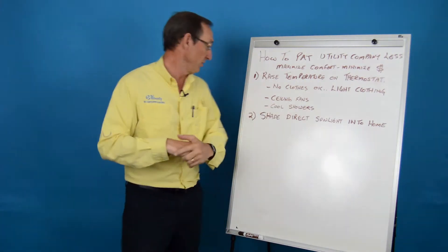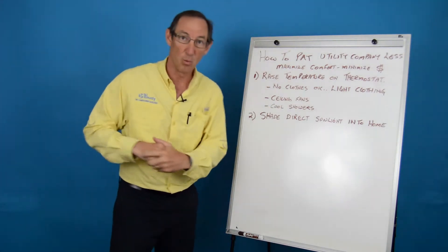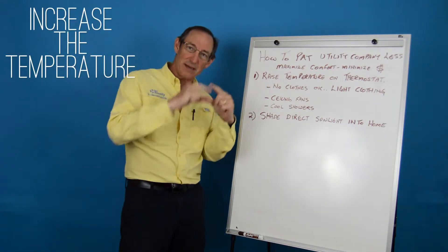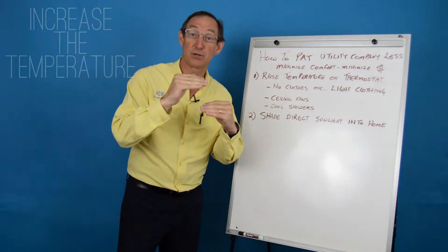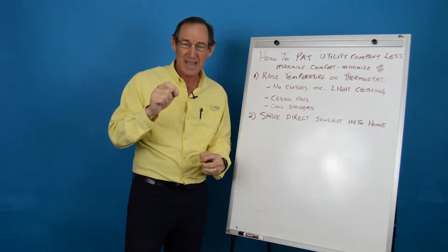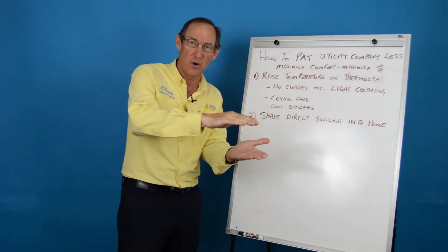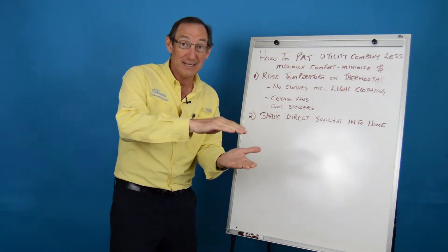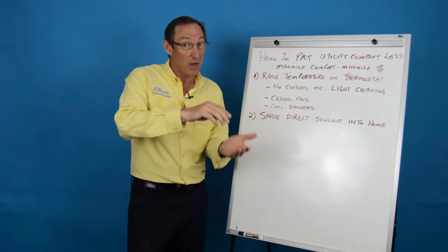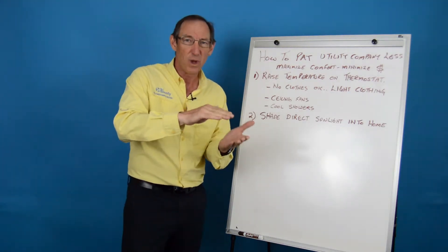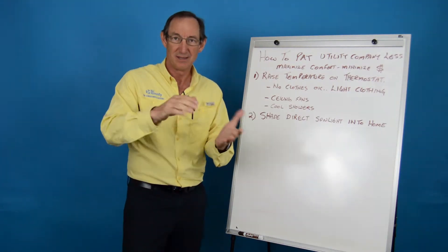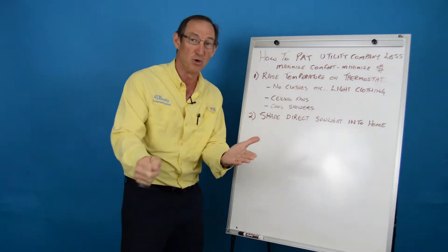So there's two main things you can do. One, raise the temperature of your thermostat up a degree or even two degrees in the summertime. Because every degree less than 78 that you're trying to keep your home, you're increasing the energy consumption of the air conditioning 12 to 15 percent. So if you keep it at 77, boom, that's 12 percent.